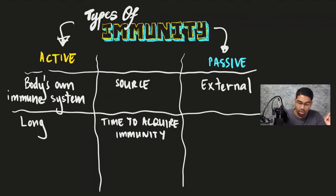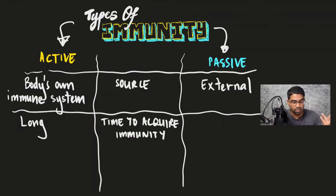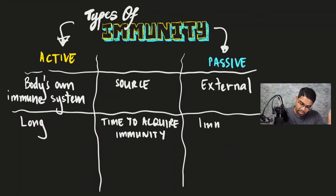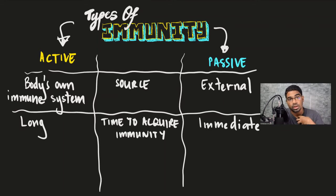The time to acquire active immunity is relatively long — probably a few weeks to a few months, depending on the type of pathogen, the type of disease, and the type of vaccine. Whereas for passive immunity, the antibodies have already been produced and are being introduced into our body, so they are effective immediately. As soon as the antibodies are introduced, they are ready to fight the antigens.